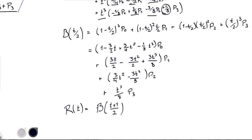So here, as T goes from 0 to 1, T plus 1 over 2 goes from 1 half to 1. So we want to show that these two polynomials are the same.